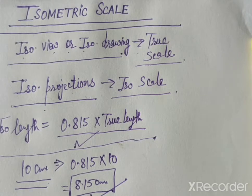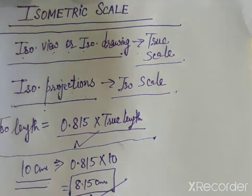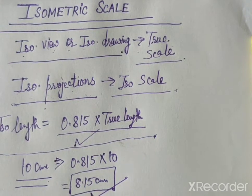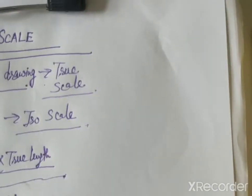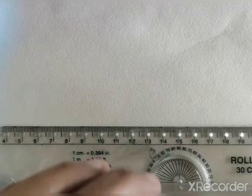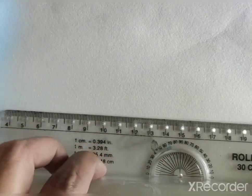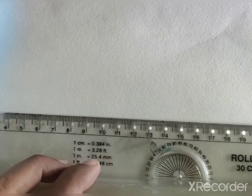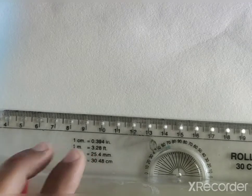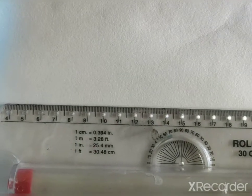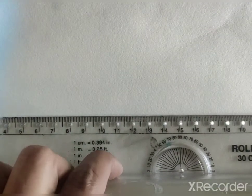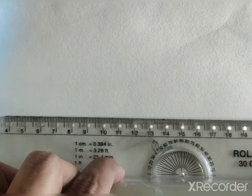Now we will go to the method of drawing the isometric scale. So now we will start with the construction of isometric scale. For this, we will draw a reference line first. Any horizontal line.